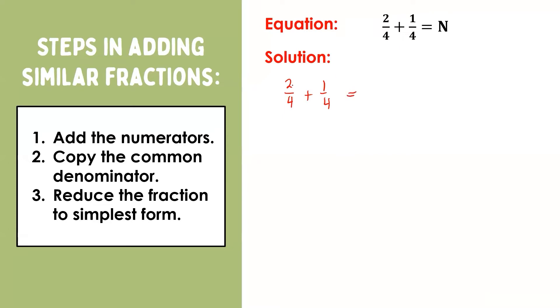For us to add similar fractions, we simply add the numerators. That is, 2 + 1, which gives us 3. Then we copy the common denominator, which is 4. So we have 3/4.